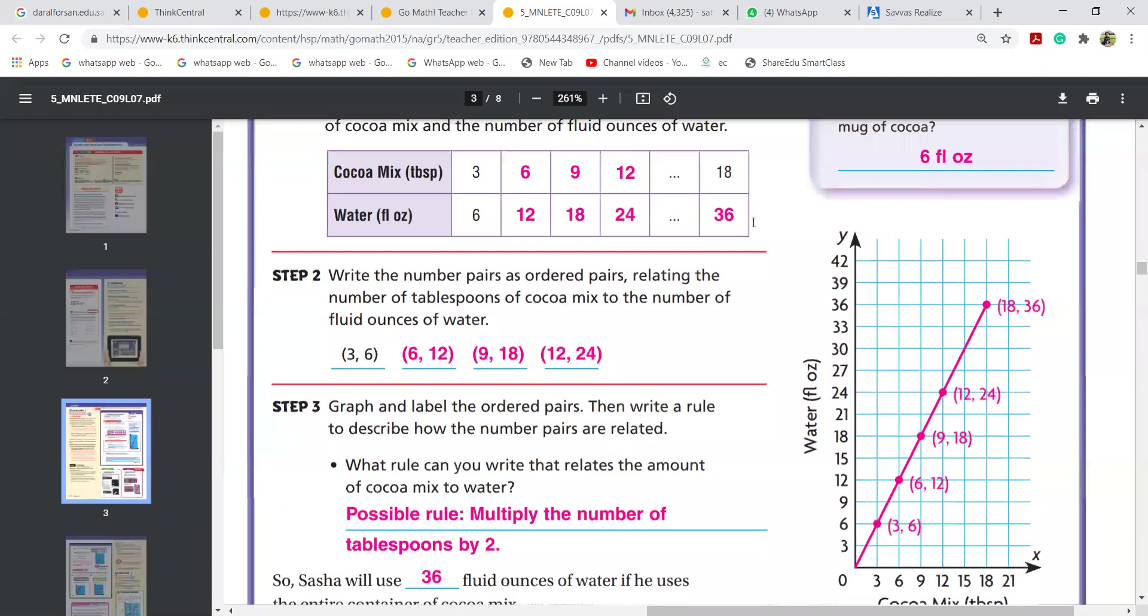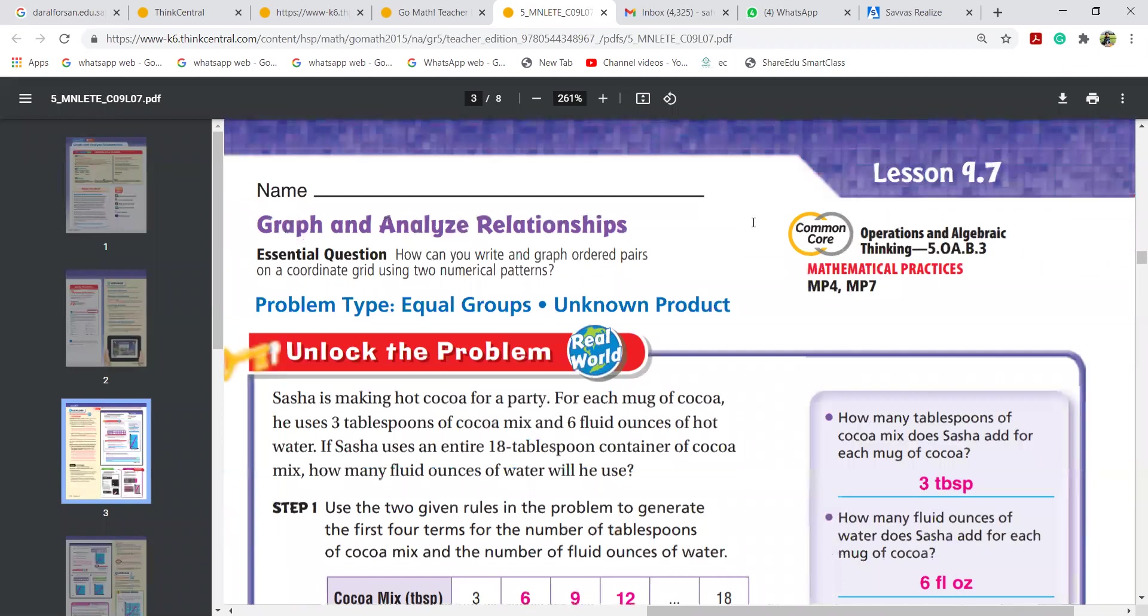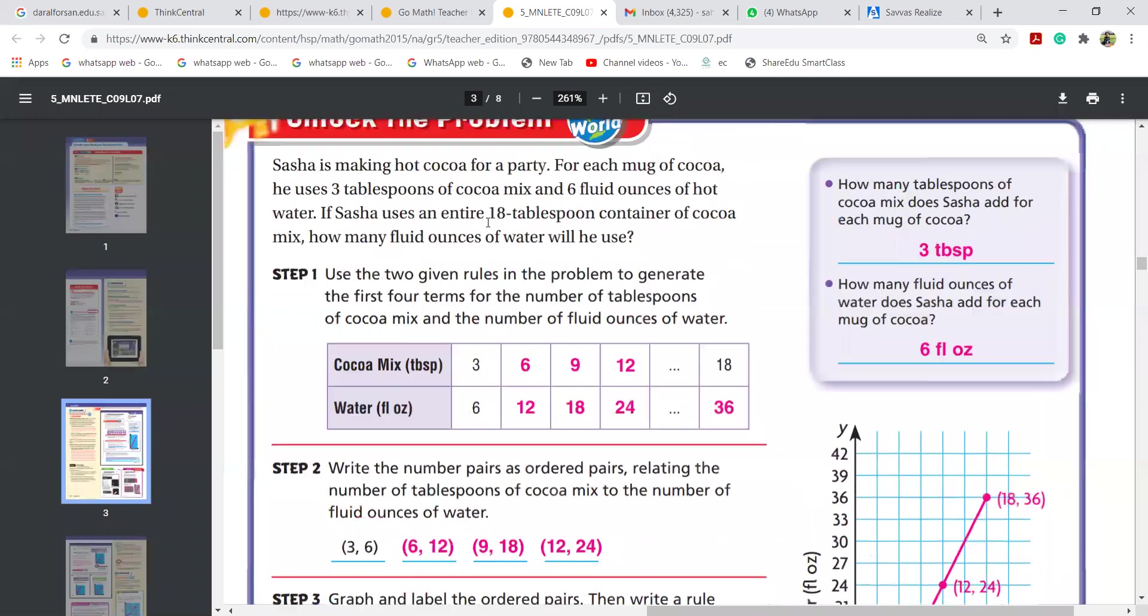So girls, let us continue with lesson number 9.7, graph and analyze relationship. And here, as you have filled up the box in the questions, given clearly that three tablespoons of cocoa mix and six ounces of hot water, you need to plus three every time here. Three plus three is six, six plus three is nine, nine plus three is twelve, and so on till 18.